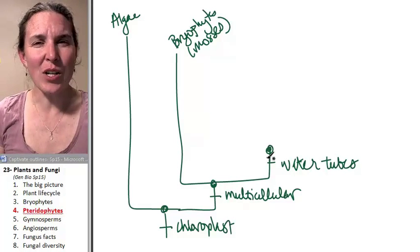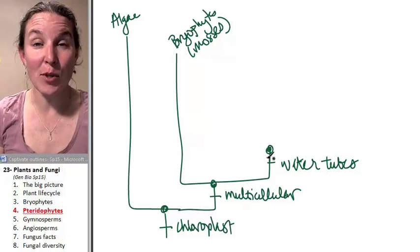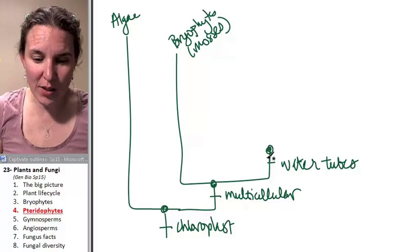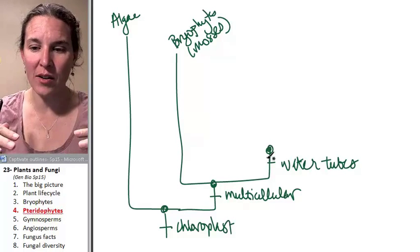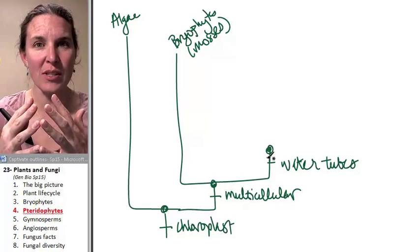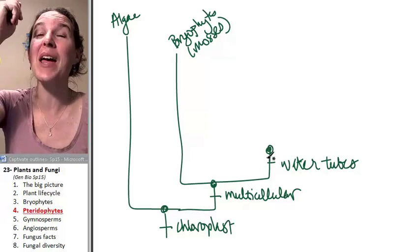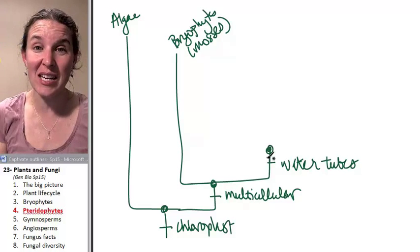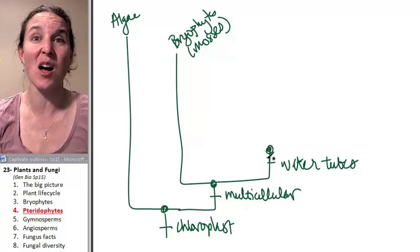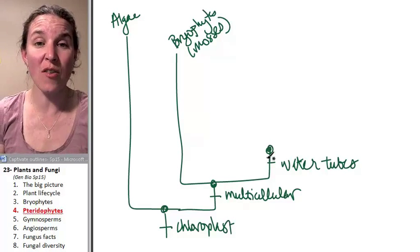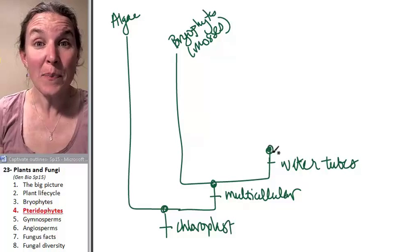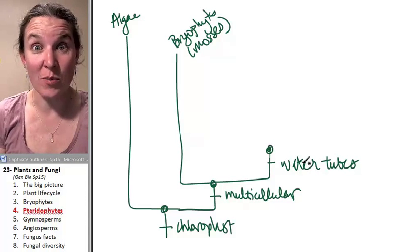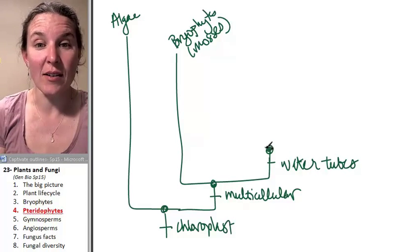Trees have roots and they suck water in through their roots, then take that water all the way up to their leaves at the very top of very tall redwood trees. It's because they have water tubes that they can do that.